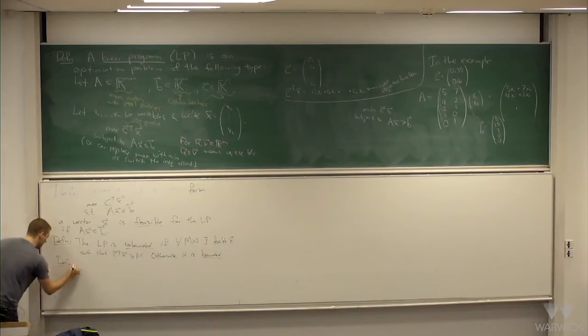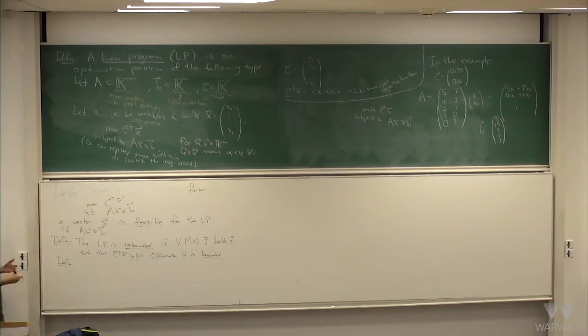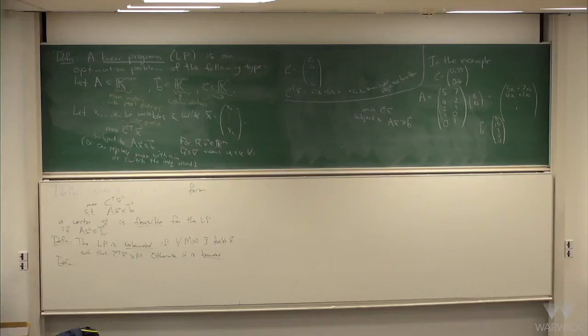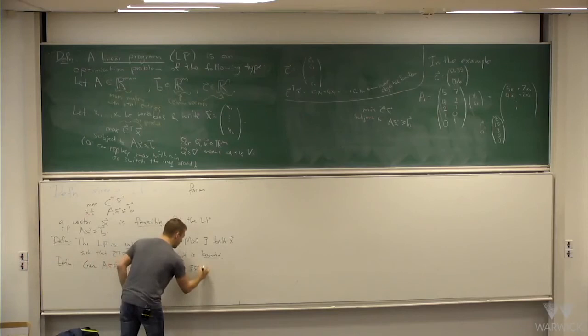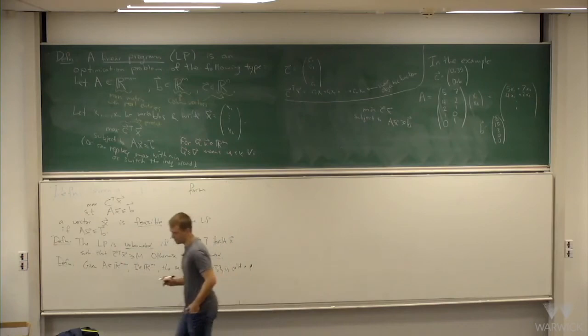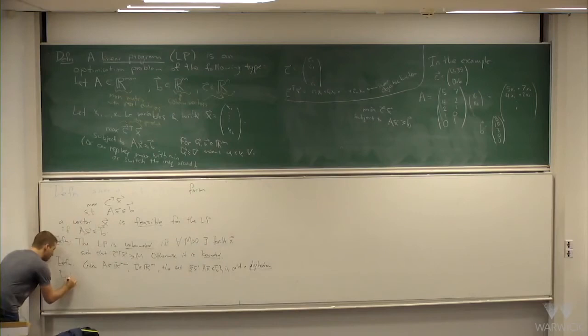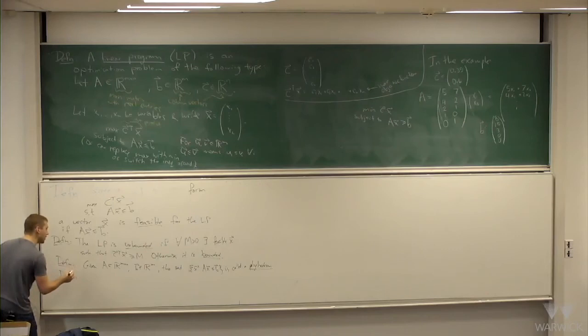Two geometric definitions: the set of all feasible points for a linear program — the set of all X such that AX ≤ B — is called a polyhedron. A bounded polyhedron is called a polytope. It's hard to visualize things in dimensions higher than two or three, so whenever I ask you to sketch a polytope, it will always be in dimension two.